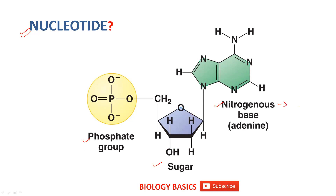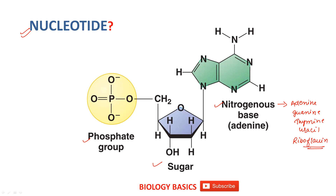What kind of nitrogenous bases do we have? We have adenine, cytosine, thymine, and one more — that is riboflavin. Riboflavin is basically your nitrogenous base.